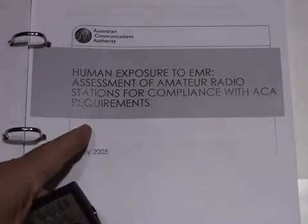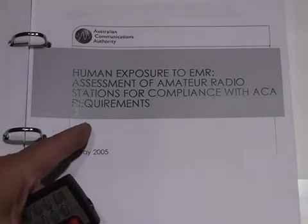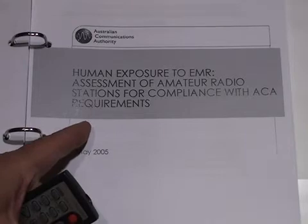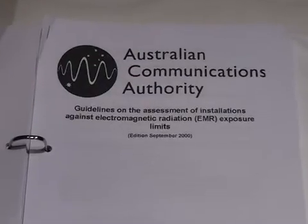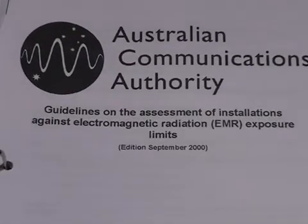The Australian Communications Authority has issued a number of papers to do with exposure to EMR or electromagnetic radiation. For example, here is a paper designed for amateur radio operators to see if their station complies with the ACA requirements. Here is another paper which sets out the guidelines on the assessment of installations against electromagnetic radiation exposure limits.